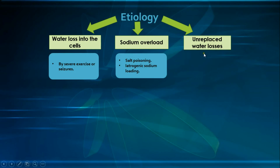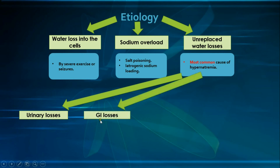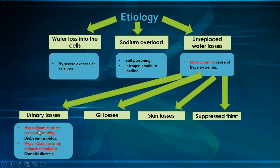The third and most common category is unreplaced water losses, with several routes: urinary losses with typically high urine output, GI losses, skin losses, and suppressed thirst. For urinary losses: a urine osmolality below 300 mOsm/kg suggests diabetes insipidus; above 600 mOsm/kg suggests osmotic diuresis; and between 300 to 600 mOsm/kg is intermediate and could be either diabetes insipidus or osmotic diuresis.